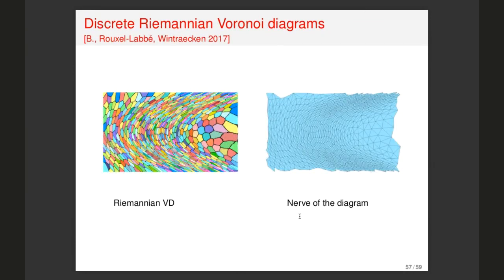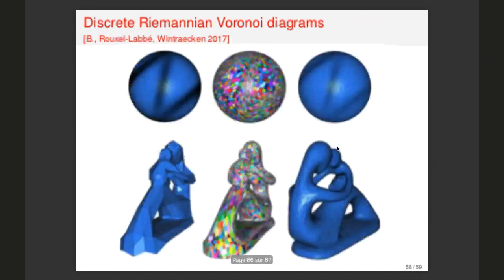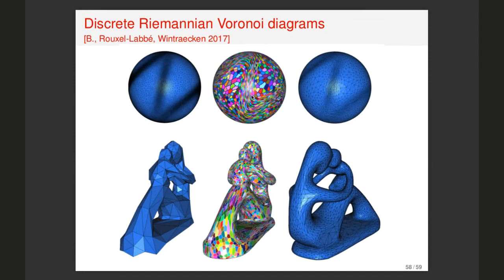This has been implemented by my student Maëlle Rouxel-Labbé, where geodesics on the Riemannian manifold are computed by first constructing a dense mesh and then approximating geodesics within it. On the left you see the anisotropic Riemannian Voronoi diagram, and on the right its nerve — which, because of protection and everything, is a triangulation. Examples are shown for surfaces: a sphere with an anisotropic metric, and a statue scanned by a scanner, with the Voronoi diagram and triangulations at different vertex counts.